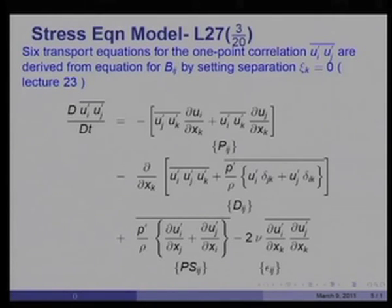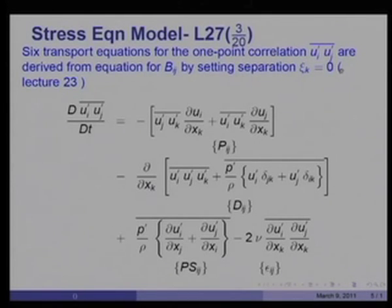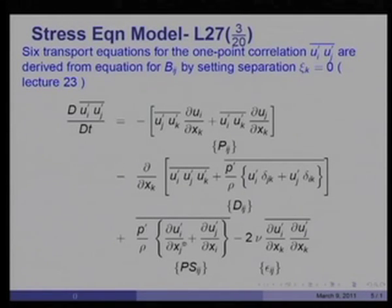We now turn to the stress equation models. The six transport equations for the one-point correlation u_i′u_j′ are derived from the equation for b_ij discussed in lecture 23, where gradients with respect to separation distance xi_k are set to zero, and only differentials with respect to x_k survive. The terms include convective transport, production rate, diffusion rate, the pressure-strain term, and the dissipation or destruction of the stress epsilon_ij, which differs in different directions.